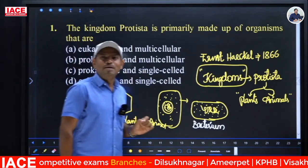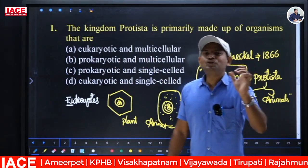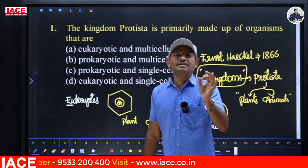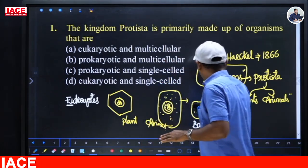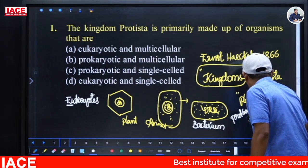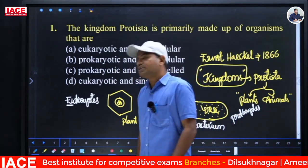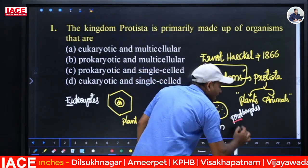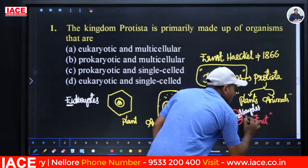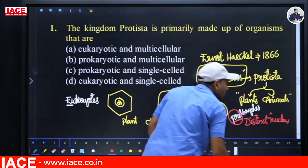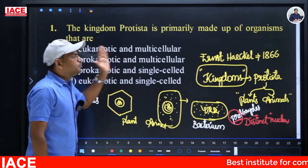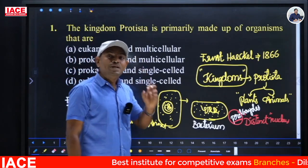If we observe a bacterial cell, the genetic material is present at the center but the nuclear components and remaining cellular components are almost mixed, because nuclear membrane is not present. If a nuclear membrane is present around the nucleus, such organisms are called Eukaryotes — 'eu' means true, 'karyon' means nucleus. Organisms which have a true nucleus are Eukaryotes. Those without a distinct nucleus are called Prokaryotes — 'pro' means false.